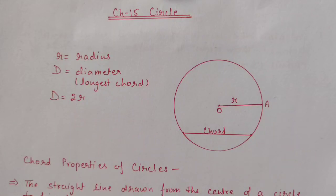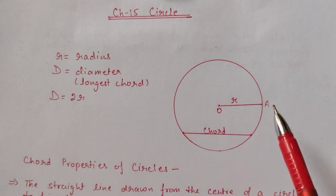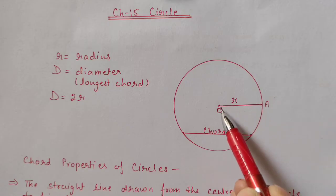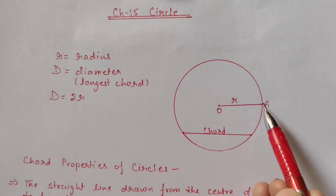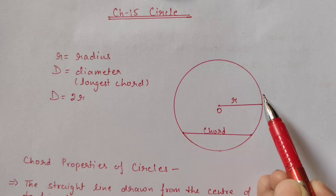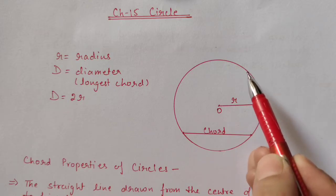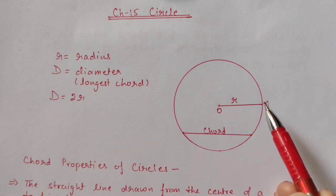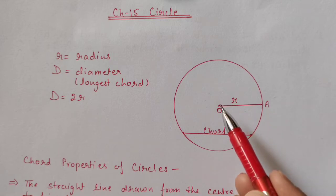Hello students, today we are starting chapter number 15 on circles. First I will explain a few terms related to circles and their properties, then we will start the exercise. A circle is the path of a point at a fixed distance from a fixed point. From this fixed point, at a fixed distance, if we move this point, the path it covers is the circle.